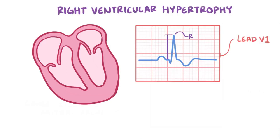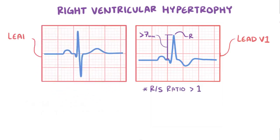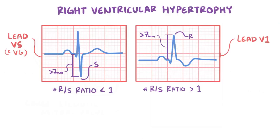In fact, a dominant R wave in V1 is a classic sign of right ventricular hypertrophy, and it's defined as one that's over 7 mm tall, or 7 little boxes, and is larger than the S wave, making the R to S ratio greater than 1. In V5 and V6, another classic sign of right ventricular hypertrophy is a dominant S wave, meaning that it's over 7 mm deep, again 7 little boxes, and bigger than the R wave, making the R to S ratio less than 1.